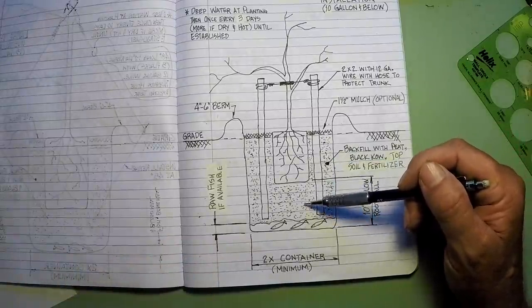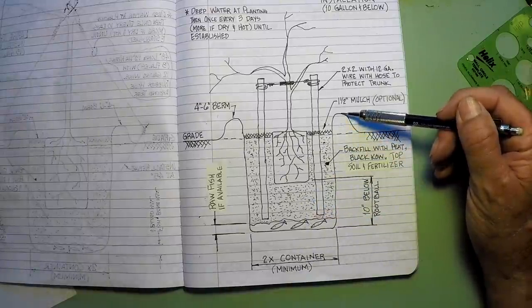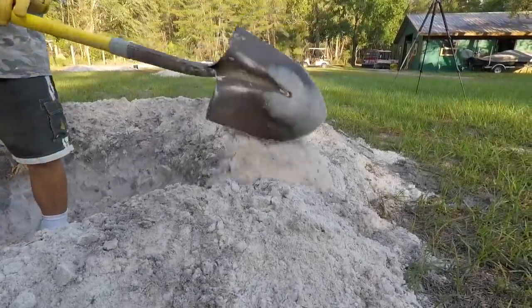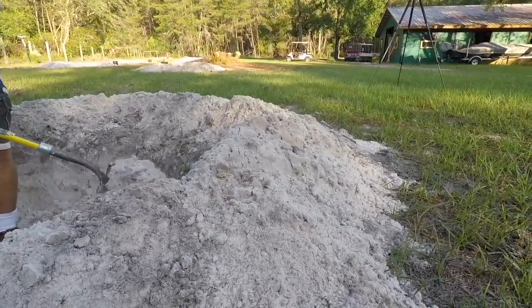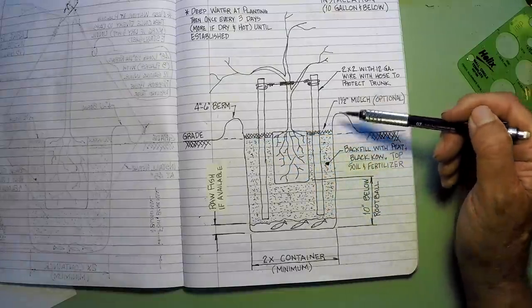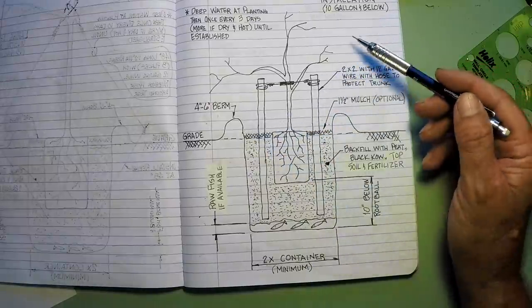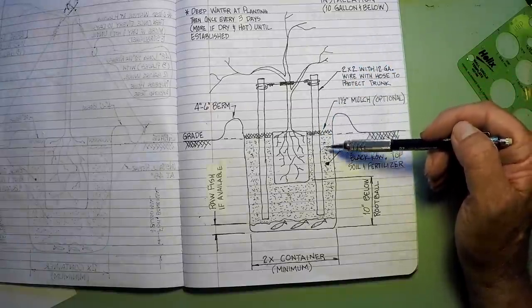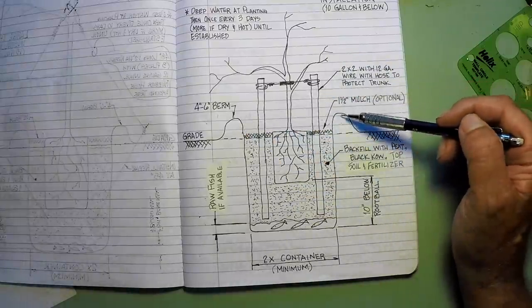When you dig the hole, take the soil that comes out of it and make a berm around the hole. This berm is going to need to be about six inches high. The reason for that is when it rains, this berm will help capture the water and it creates a basin. These trees are going to need a lot of water, and with that berm right there, it captures the rain, keeps it from running off and funnels that water right on down into that root system.